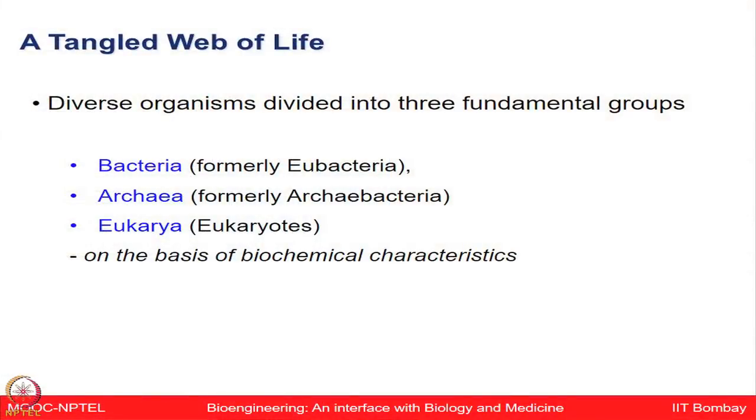Broadly, 'pro' means primitive and 'karyon' means nucleus; 'eu' means advanced. When there is a distinct nuclear boundary, the cell is eukaryotic; if the genetic material is diffused in the cytoplasm, it is a prokaryote. Diverse organisms are divided into three fundamental groups: Bacteria (formerly eubacteria), Archaea (formerly archaebacteria), and Eukarya (eukaryotes). This distinction is made on biochemical characteristics, and these fundamental groups are known as domains. Carl Woese suggested grouping organisms into three domains based on 16S ribosomal RNA properties.